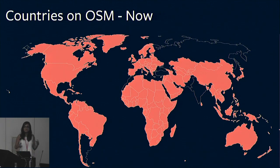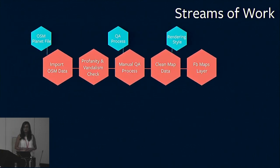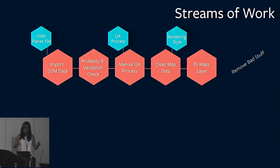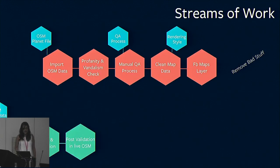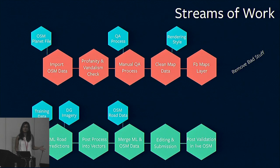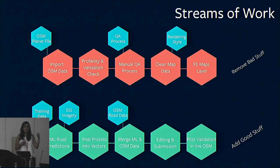I'm going to talk about our dynamic within the team and how we've split things up. These are our two streams of work that we focus on within Facebook. This is our QA work, and the very technical term, the 'remove bad stuff' team — that's one of the streams. And then we also have our second stream of work, which we call the 'add good stuff' team. The top one is more about quality and making sure that the map we use is free of vandalism.